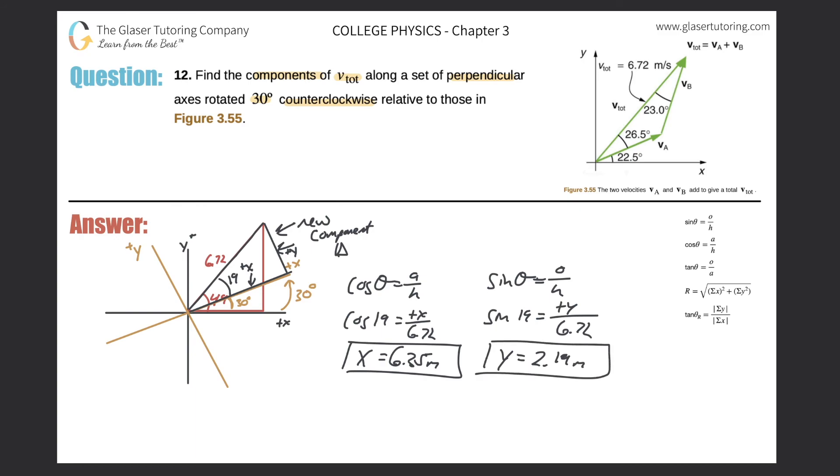So those would be the components of the total velocity vector if the axes were rotated 30 degrees counterclockwise. Guys, thanks for tuning in. Hope this made sense. Thanks for taking a little extra time with me here to draw the pictures out. I think it makes the visuals help make more sense. So I definitely appreciate your time. And please do subscribe. It definitely helps us out tremendously. Until next time.